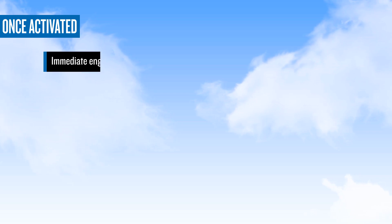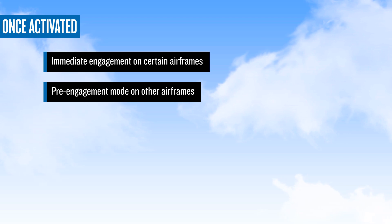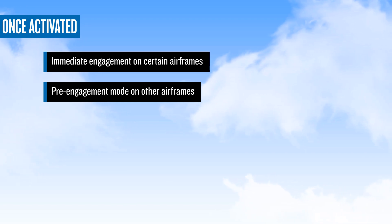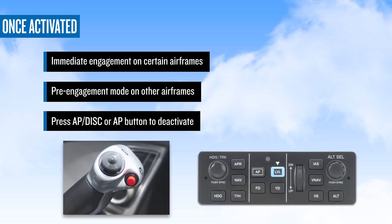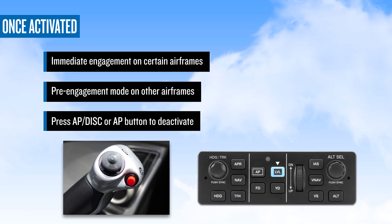On certain airframes, Emergency Autoland will engage immediately upon activation. Other airframes may have a Pre-Engagement mode that allows for deactivation before Autoland becomes fully engaged. This Pre-Engagement mode lasts between 10 and 15 seconds based on airframe manufacturer specifications. During this Pre-Engagement period, you can cancel full engagement by pressing the AP disconnect button on your flight control or the AP button on the mode controller, which prevents configuration changes from occurring.